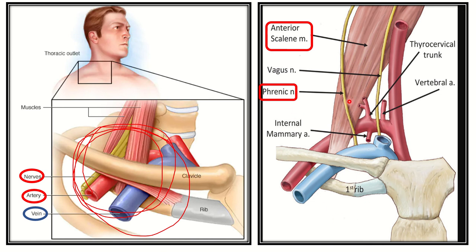The phrenic nerve passes behind the subclavian vein, behind the clavicle, and behind the first rib. So the phrenic nerve passes in front of the anterior scalene muscle - this relation is very important. The vagus nerve also passes anterior to the anterior scalene muscle. Phrenic nerve and vagus nerve, their relation to the anterior scalene in the neck is very important. The phrenic nerve passes anterior to the scalene but behind the subclavian vein, clavicle, and first rib, then descends into the mediastinum to supply the diaphragm.